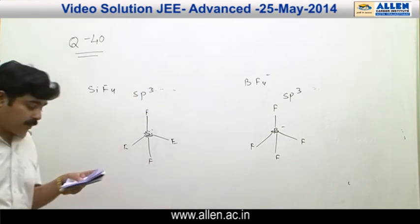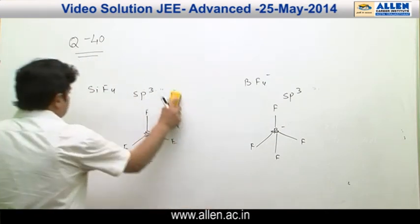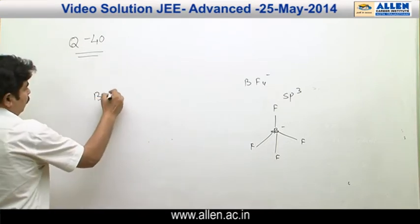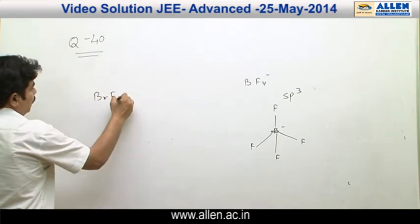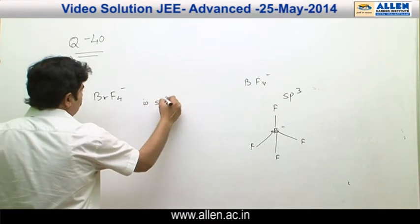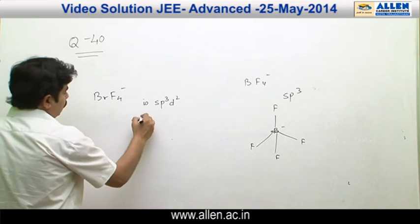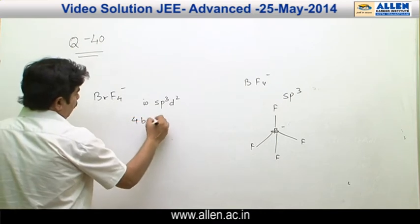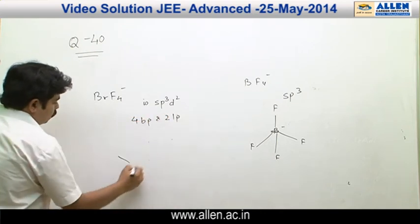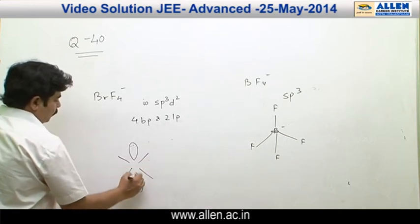Another option is BrF₄⁻. The hybridization of bromine in BrF₄⁻ is SP³D², with 4 bond pairs and 2 lone pairs, giving it a square planar shape.